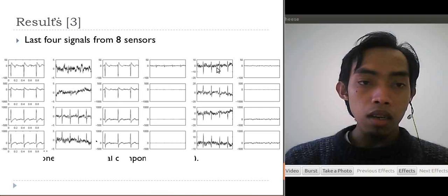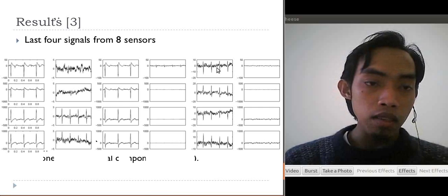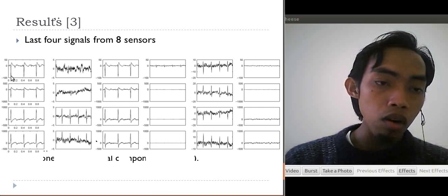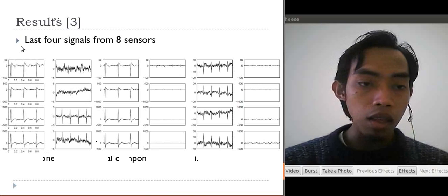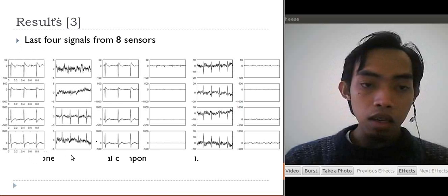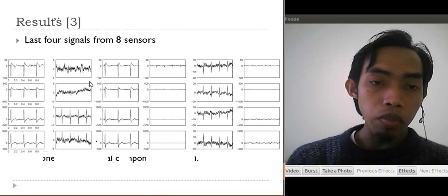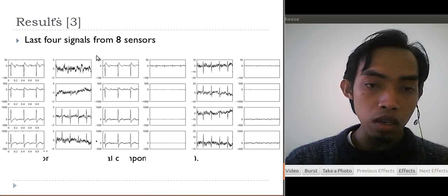The last is the last four signals from ECG signal. The left side from sensors 5, 6, 7, 8. The next graph is the signal obtained from the first step. We get the mixing matrix or source signal.